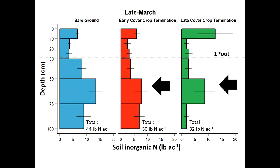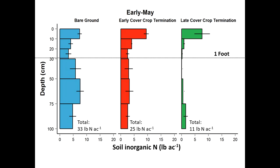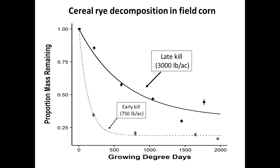Moving into early May — now we've killed the big cover crop — you can see the difference: 33, 25, 11 pounds of nitrogen remaining. Look at how much more nitrogen is being pulled out of the soil profile as we delay management. Spring nitrogen is a big deal — soils are warming, mineral nitrogen is significant. A cover crop killed in early-to-mid March versus one killed in May shows a striking difference in how much nitrogen is pulled from the system.